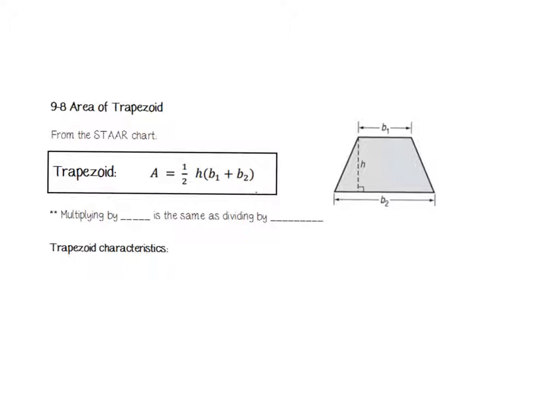So that's what this means here, base one, base two, and you can see it here, base one, base two. Those are two different lengths. Our height again is a perpendicular line from one base to the other that creates a 90 degree angle.